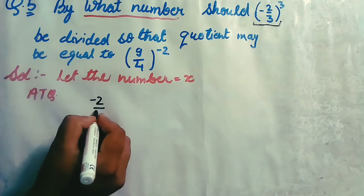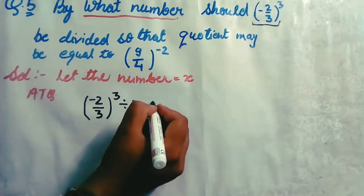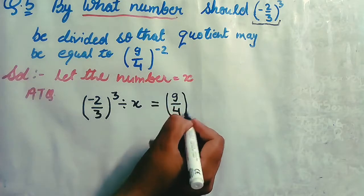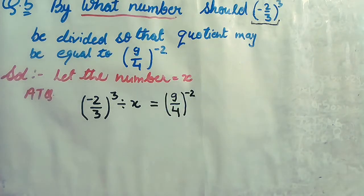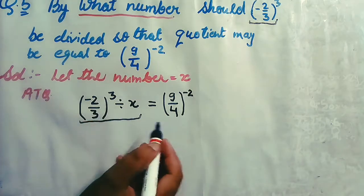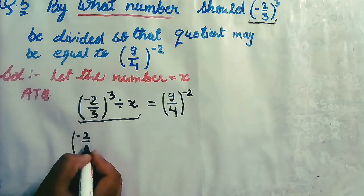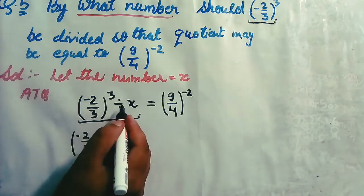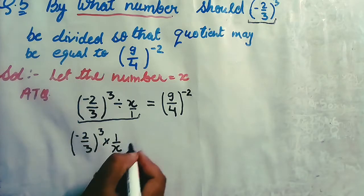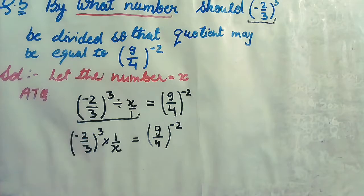So according to the question: (-2/3)³ divided by x equals (9/4)⁻². Now simplify it. On the left-hand side, we have to change division into multiplication and take the reciprocal of the divisor. So x can be written as x/1 and its reciprocal will be 1/x, giving (-2/3)³ × (1/x) = (9/4)⁻².